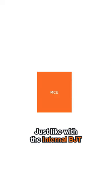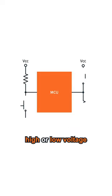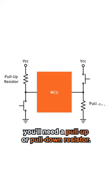Just like with the internal BJT, in a high impedance mode, if you want the output at a high or low voltage, you'll need a pull-up or pull-down resistor.